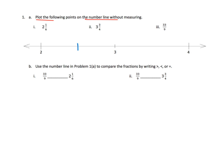Where would two and one-sixth live? Well, cut the distance into six pieces — there is two and one-sixth. Where would three and three-fourths live? Three and three-fourths says cut the distance from three to four into four pieces, and three and three-fourths would live right here.